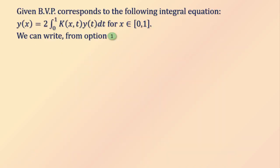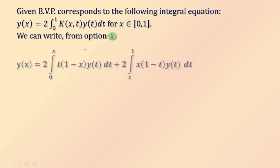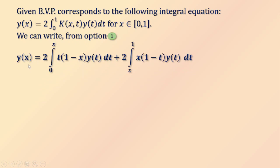So let's see. The given boundary value problem is this. From option 1, we divide into two parts: 2 times the integration over 0 to x of t·(1−x)·y(t) dt, plus 2 times the integration over x to 1 of x·(1−t)·y(t) dt.